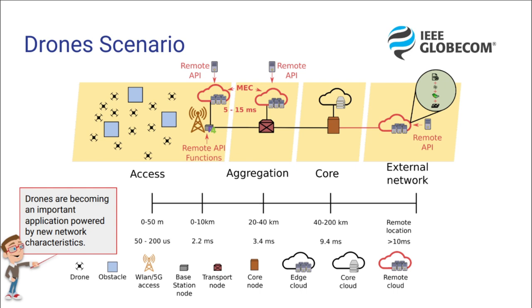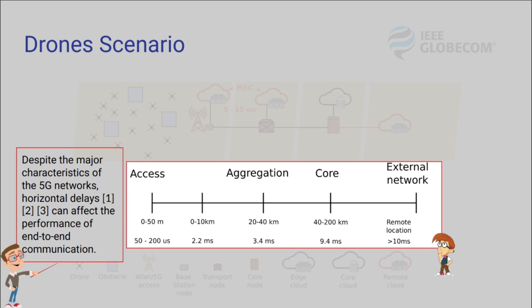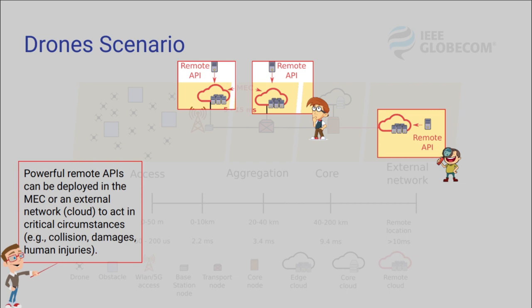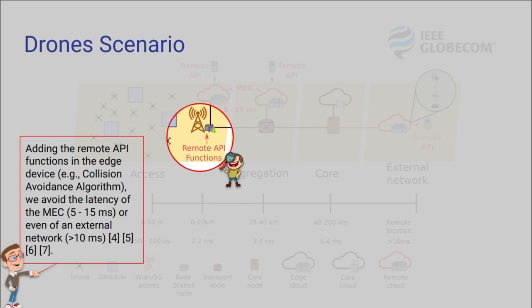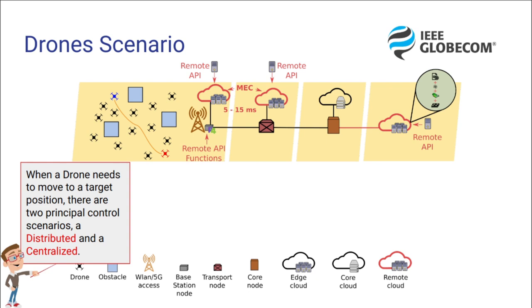This is our drone scenario. It is based on a 5G structure where the drones are set in the axis of the network. Despite the major characteristics of 5G networks, horizontal delays can affect the performance of end-to-end communication. Powerful remote APIs can be deployed in the MEC, or an extended network like the cloud, to act in critical circumstances such as a collision avoidance algorithm. From the cloud environments, we have vertical delays that also have an impact on communication. Adding the remote API functions in the edge device — a collision avoidance algorithm, for instance — we avoid the latency of the MEC, which is around 5 to 15 milliseconds, or even of an external network that is more than 10 milliseconds.